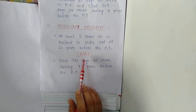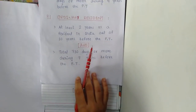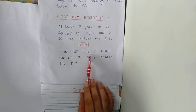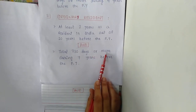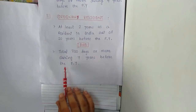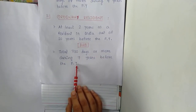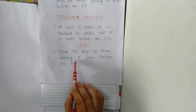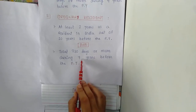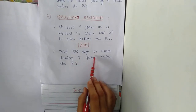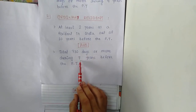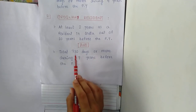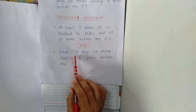The second condition for ordinary resident is total 730 days or more during seven years before the previous year. That means when checking qualification, we look at the seven years before the previous year, and the total presence must be minimum 730 days.